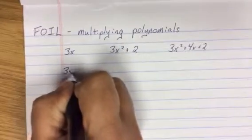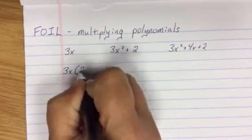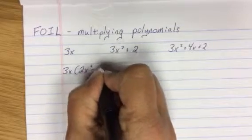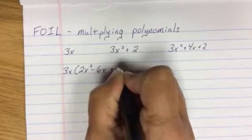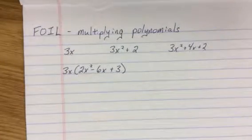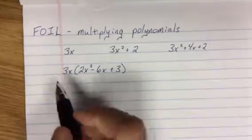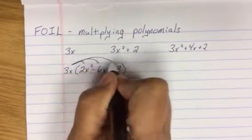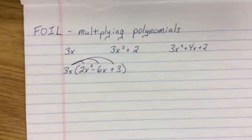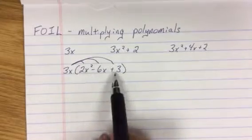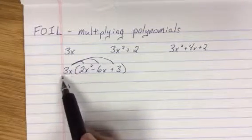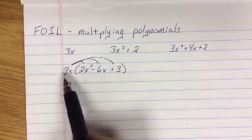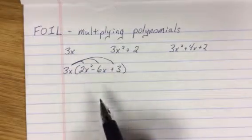So our first example: What if we multiply by a monomial, a single term? That is distribution. We distribute it through the parentheses. It doesn't matter if this is a two-term, three-term, or four-term. The monomial or single term on the outside gets multiplied through every term on the inside.